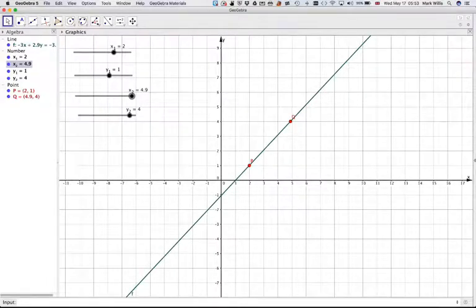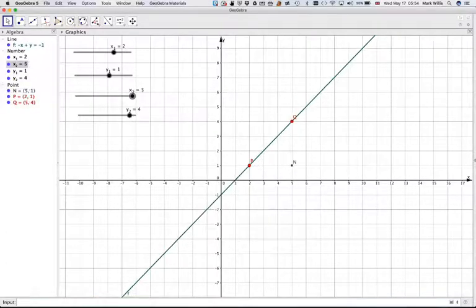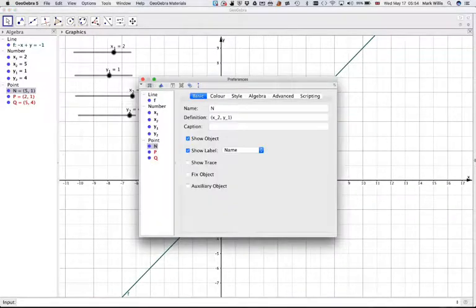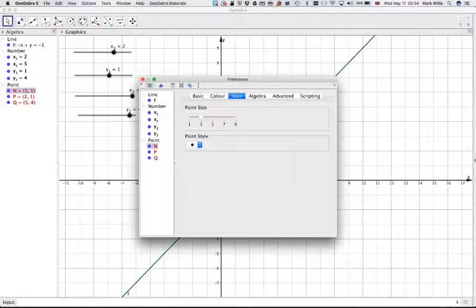We want to put in this point here as well. We call that point N = (x₂, y₁). So we want the x-coordinate of Q, which is x₂, and the y-coordinate of P, which is y₁. Now we'll put that point there. If I just make that 5, then okay. Again, I can make that point stand out: object properties, color red, style, make it stand out.